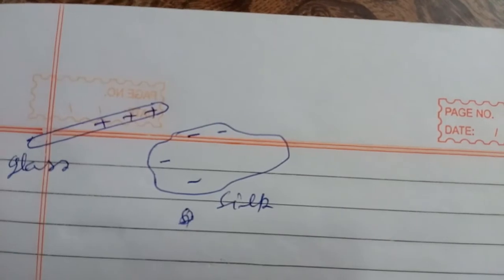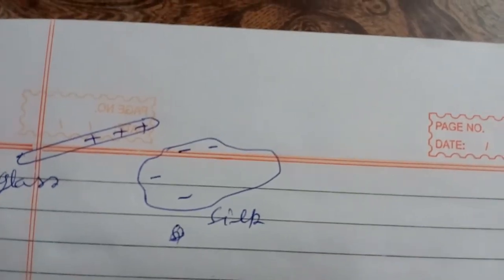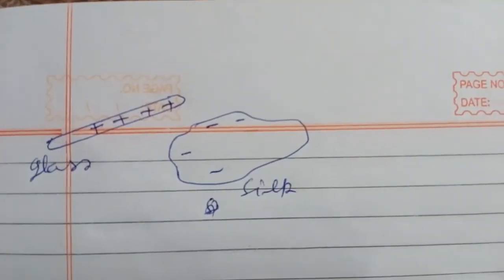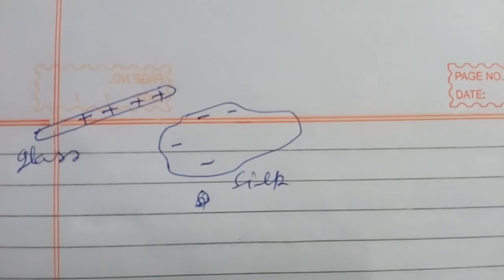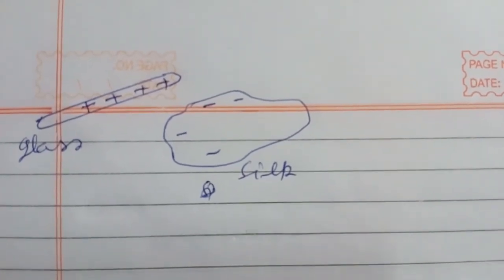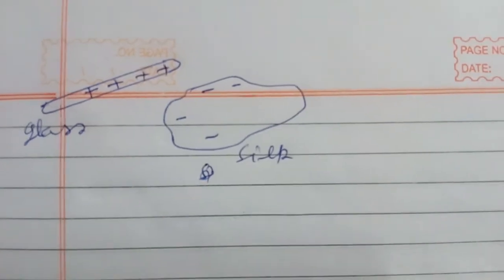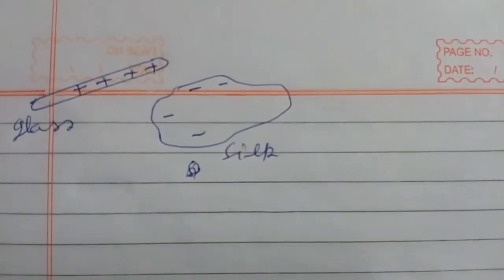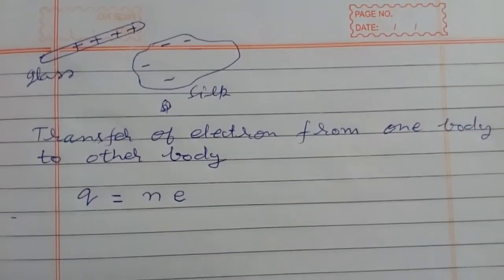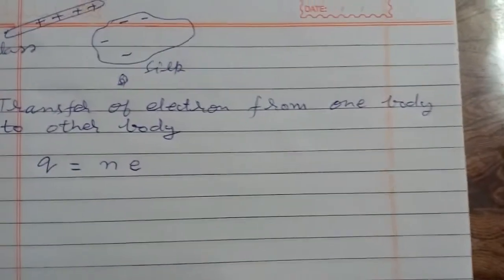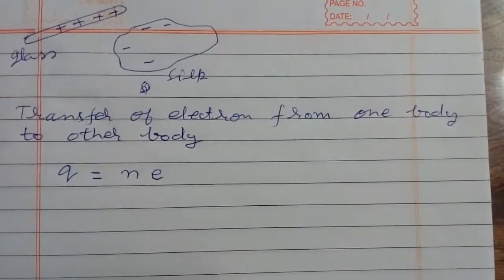Now when you rub a glass rod with silk, few electrons transfer from glass rod to silk. So number of negative charges in glass rod decreases, and at the same time, silk acquires the same negative charge. So glass rod becomes positively charged. The cause of charging is transfer of electrons. When a body loses electrons, it becomes positively charged, and at the same time, the other body becomes negatively charged.